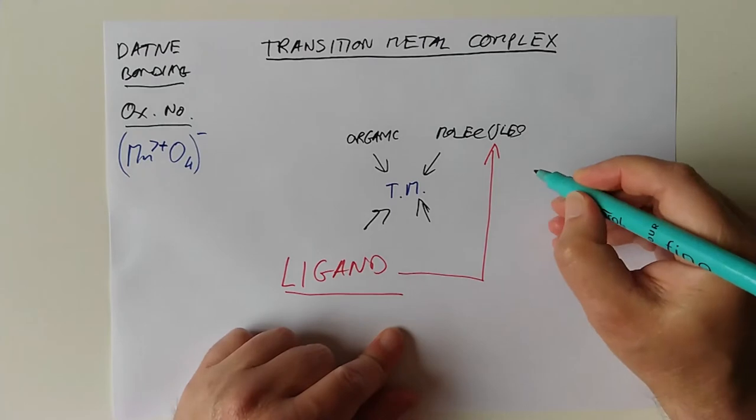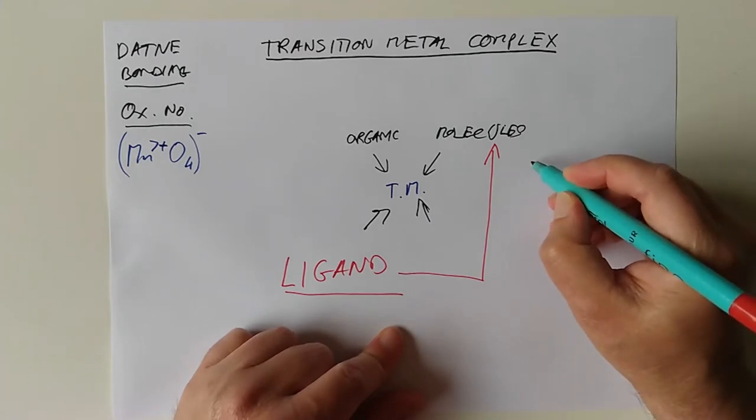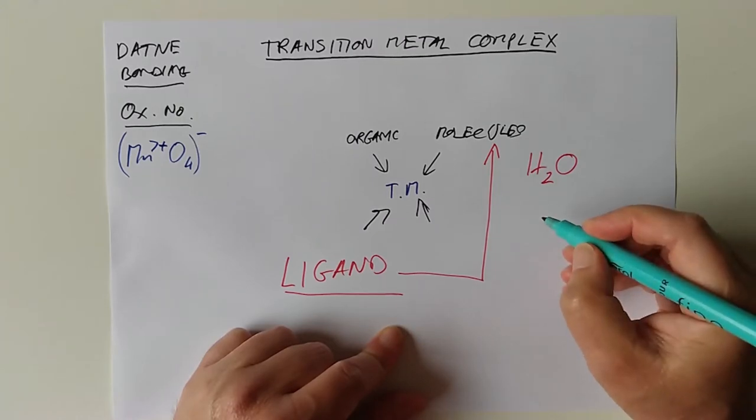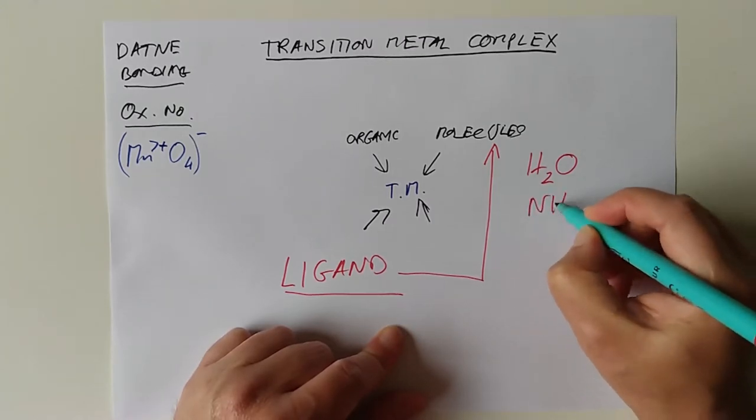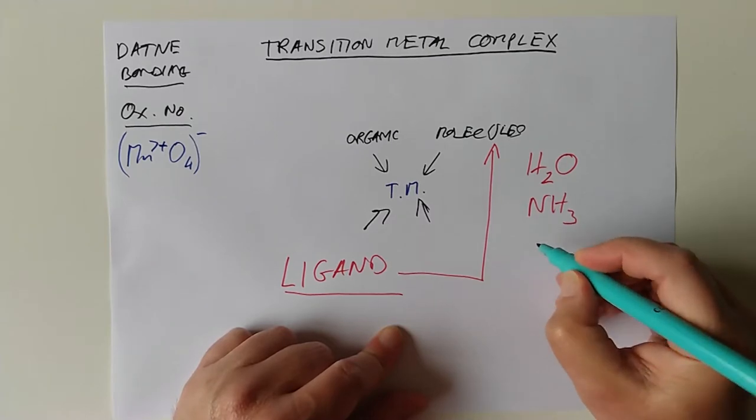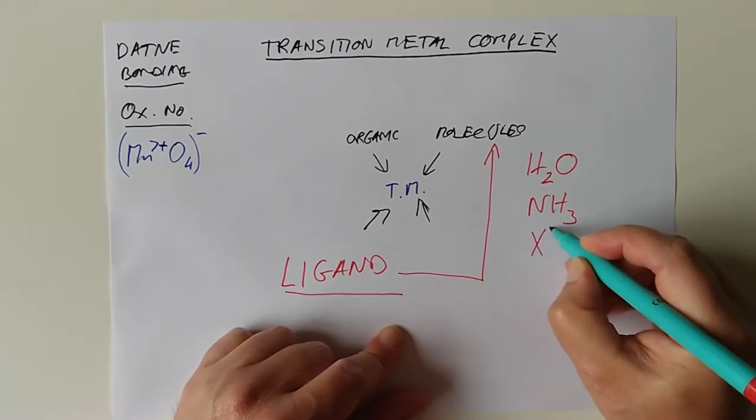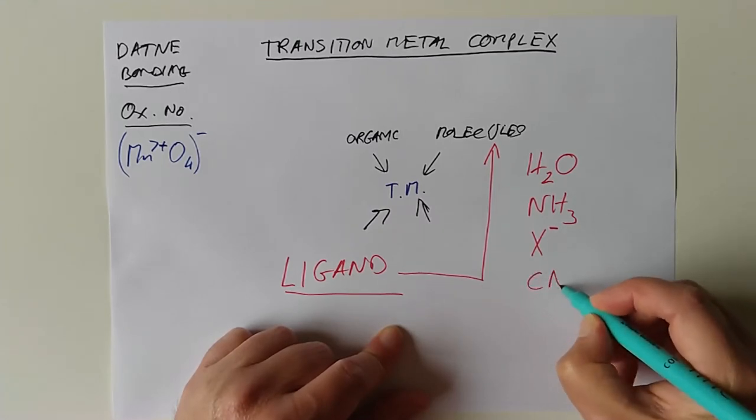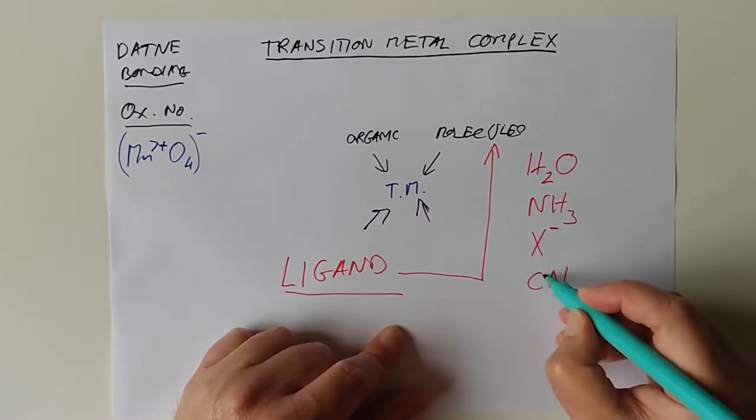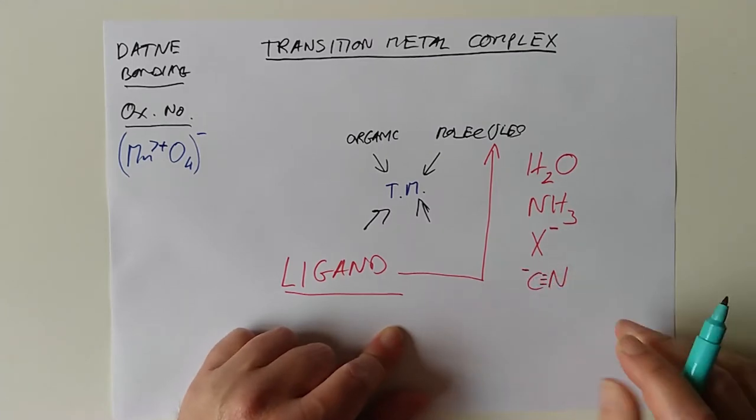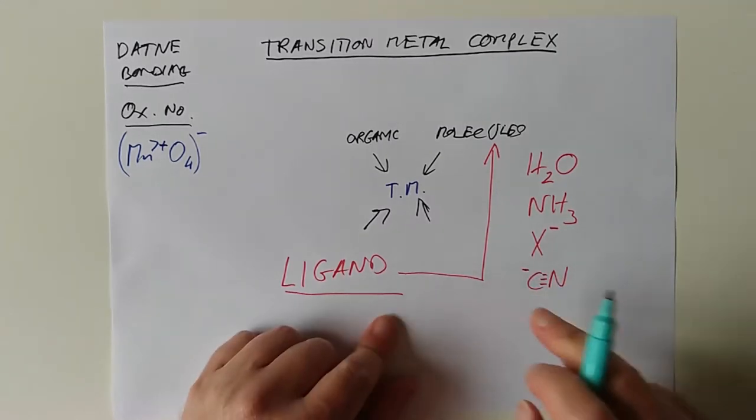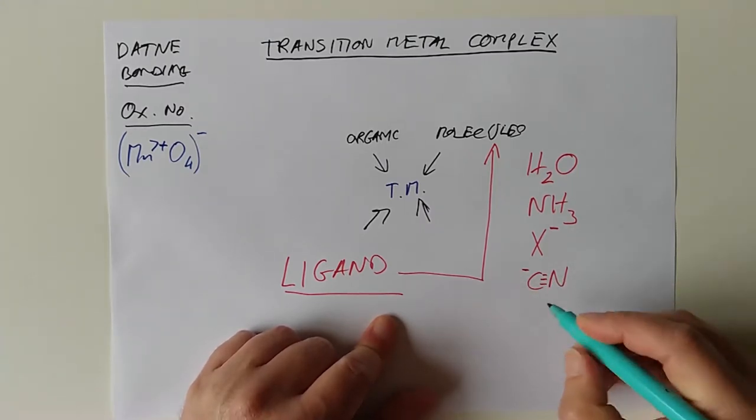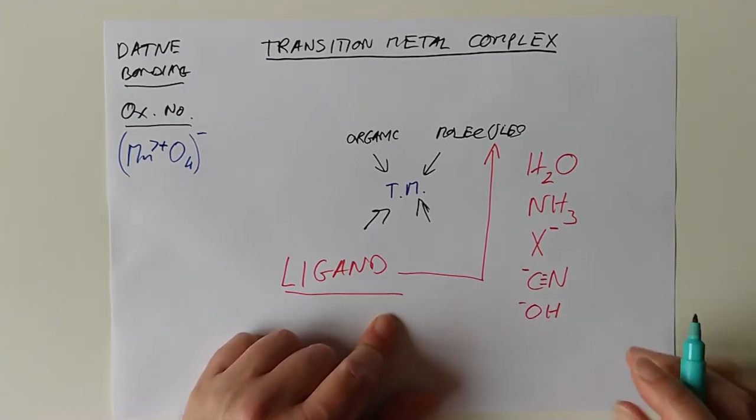They want you to know about, let's number them down here. H2O, that's an example of a ligand. NH3, ammonia. The halogens, which we'll just call X with a minus charge. So that's the halogen ions. Cyanide, which we haven't come across much. That's actually a triple bond there. And there's a charge on it. So cyanide is actually an ion. You'd have something cyanide, like potassium cyanide. And hydroxide, OH minus.